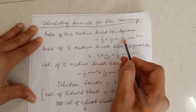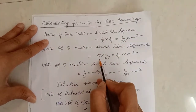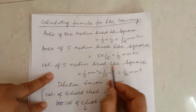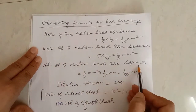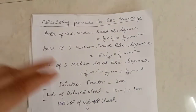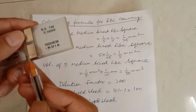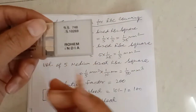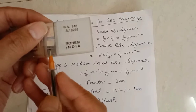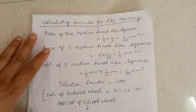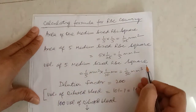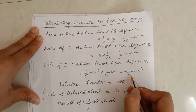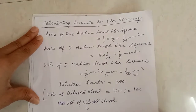The volume of the 5 medium-sized RBC squares equals area multiplied by depth. The depth — the distance between the undersurface of the coverslip and the upper surface of the counting grid — is 1/10 mm. So volume = 1/5 mm² × 1/10 = 1/50 cubic millimeter.